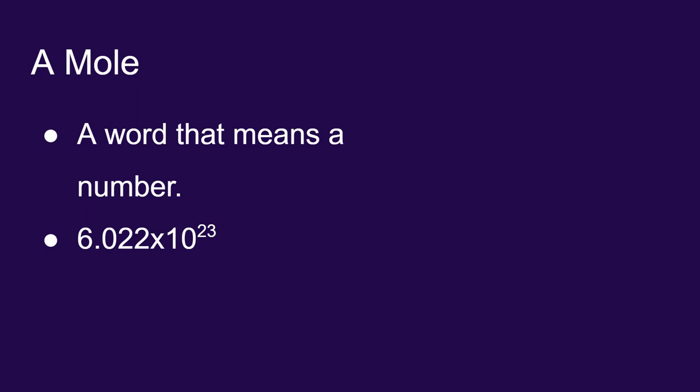It's a huge number. You would never talk about this number unless you were talking about things that were really, really small. You would never talk about 6.022 times 10 to the 23 donuts, for example—that would be about the size of Jupiter. You would only talk about things on the scale of atoms or molecules.